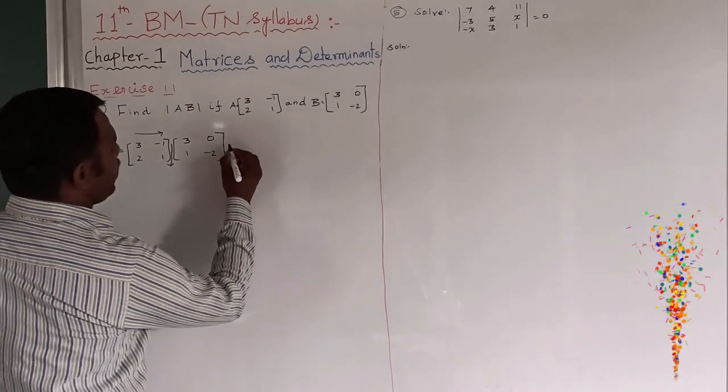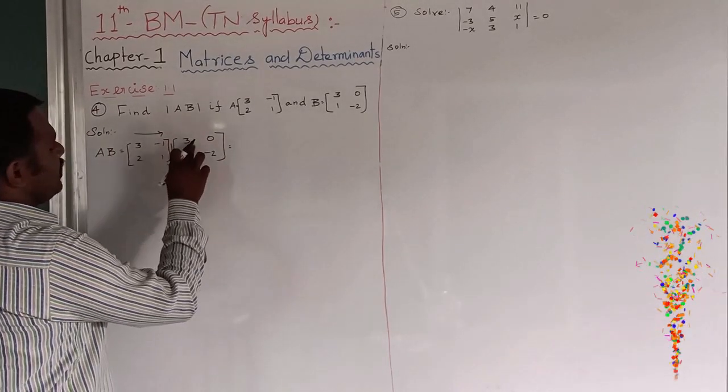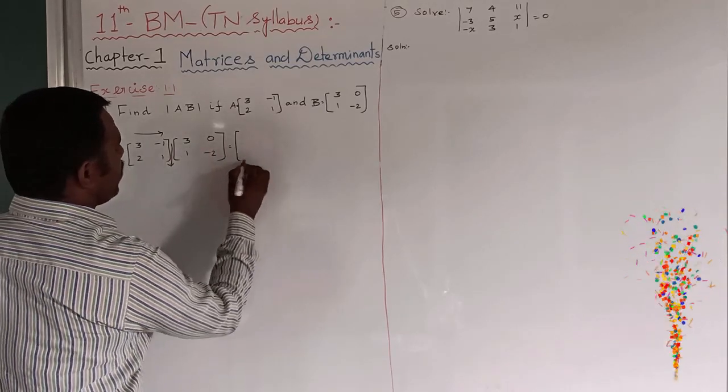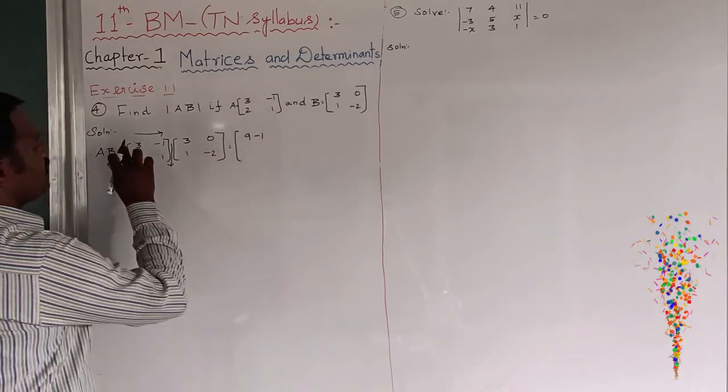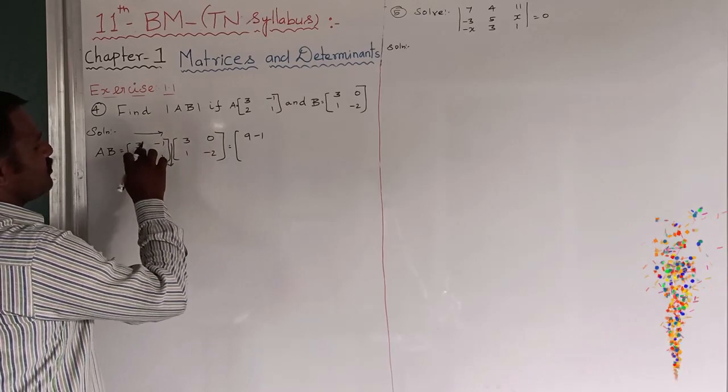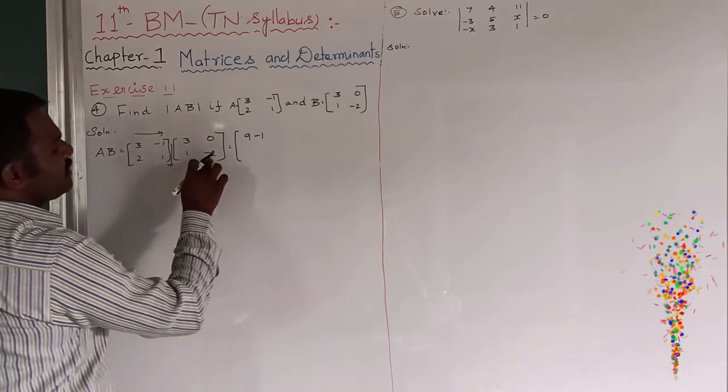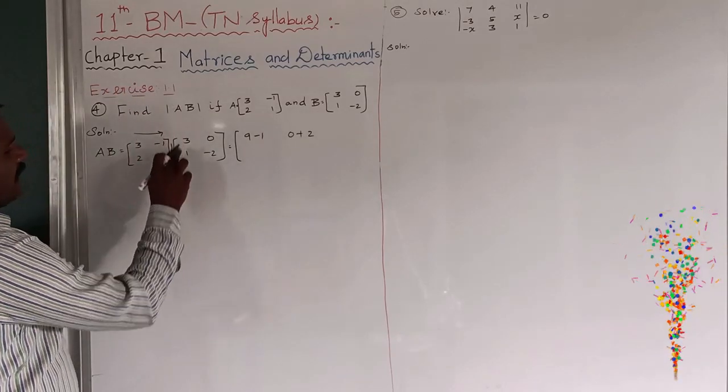So, I want to multiply by using that. Three threes are 9 and minus 1. So, what is that? 9 minus 1. And next, first row, second column. 3, 0 is 0. Minus into minus plus 2. 0 plus 2.